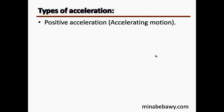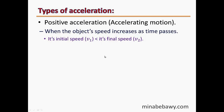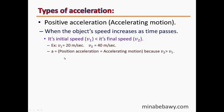Types of acceleration: we have two types. The first is called positive acceleration, or accelerating motion. This occurs when the object's speed increases as time passes, and only when its initial speed V1 is less than its final speed V2. For example, if a car's initial speed is 20 m/s and its final speed is 40 m/s, V2 is greater than V1, so the type is positive acceleration.